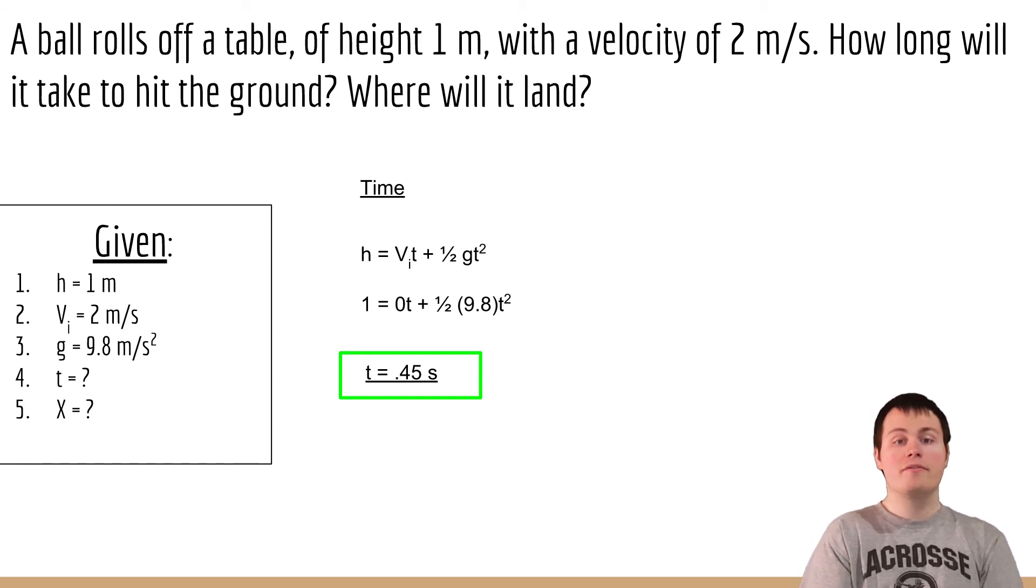Next we try and figure out where it will land and what the distance was from the table. So for that we're going to just use a simple equation. The distance is equal to velocity times time. That's all we need to know.